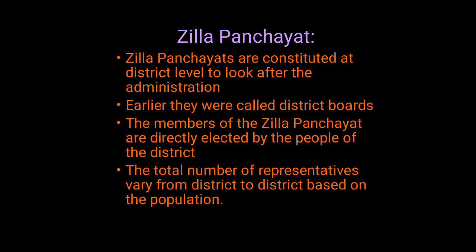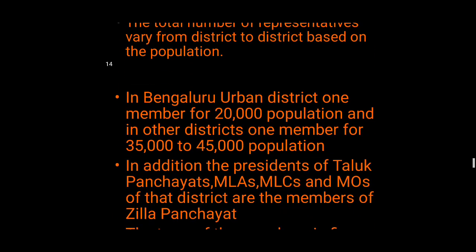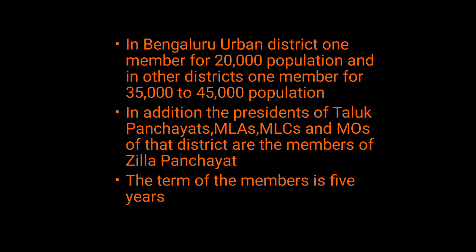Now moving on to Jilla Panchayat. Jilla Panchayats are constituted at the district level to look after administration. Earlier they were called district boards. The members of the Jilla Panchayat are directly elected by the people of the district. The total number of representatives varies from district to district based on population. In Bengaluru Urban District, one member represents 20,000 population; in other districts, one member for 35,000 to 45,000 population.